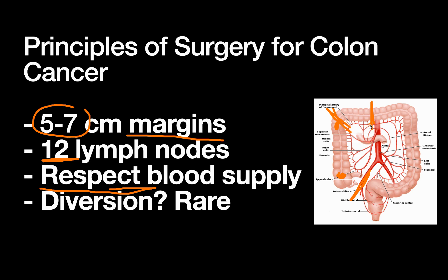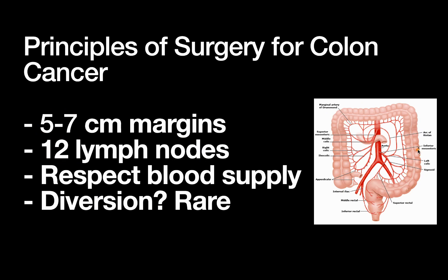For a higher lesion you might do an extended right hemicolectomy, making sure you preserve blood supply to the remaining colon. For a left-sided cancer you might do a left hemicolectomy, or an extended left. You always want to pay attention to where your middle colic, left colic, and right colic arteries are, and not perform a resection that compromises blood supply to another segment of the colon.